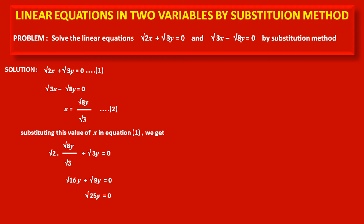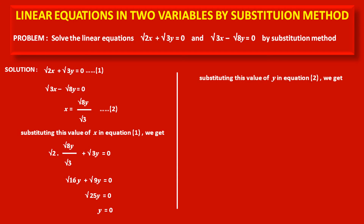So root 16 plus root 9, that is root 25, multiplied by y is equal to 0. Dividing both sides by root 25, we get y is equal to 0. Substituting this value of y as 0 in equation 2, we get x is equal to root 8 into 0 upon root 3, so x is equal to 0.